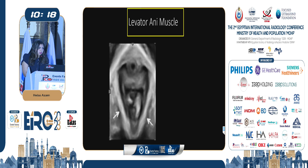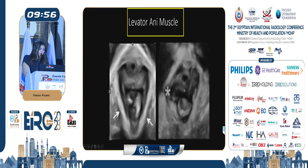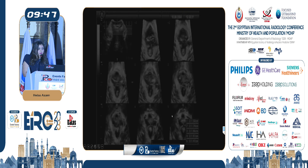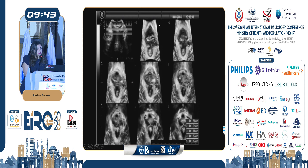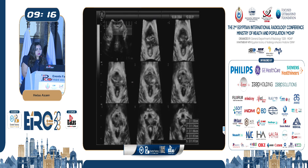The levator ani muscle can be assessed using transperineal ultrasound, especially with 3D and 4D reconstruction. We can properly assess the muscle's symmetry on either side, its thickness, and whether there is interruption of the muscle fibers. This shows the normal appearance of the levator ani muscle, while here there is a defect on the right side of the puborectalis muscle and a defect in the left sling of the muscle seen across multiple slices. Classifications by DeLancey and by Dietz provide scoring systems to grade the severity of muscle injury based on the percentage of muscle affected on either side and the number of slices involved.